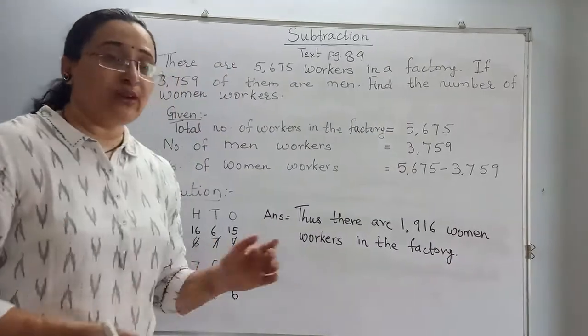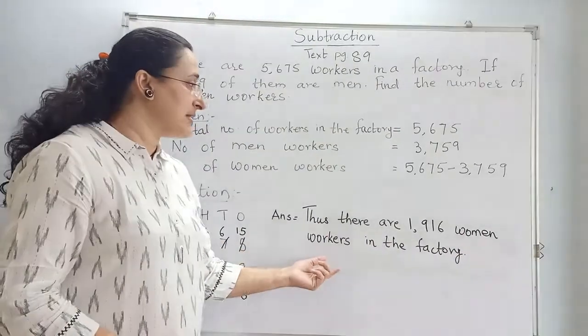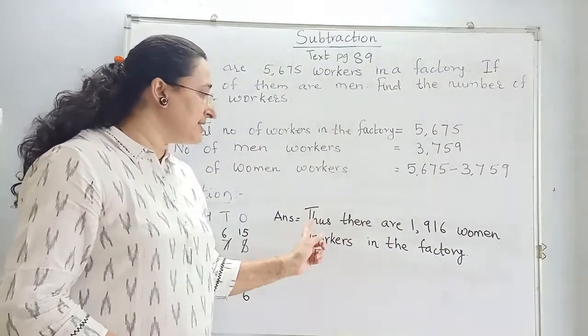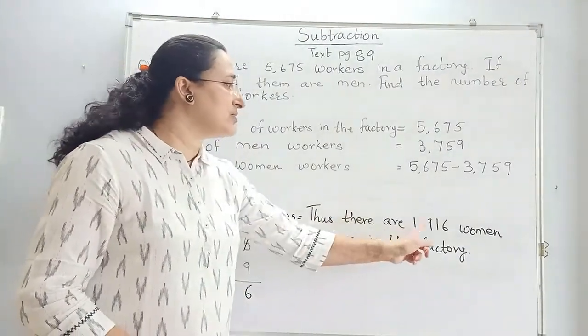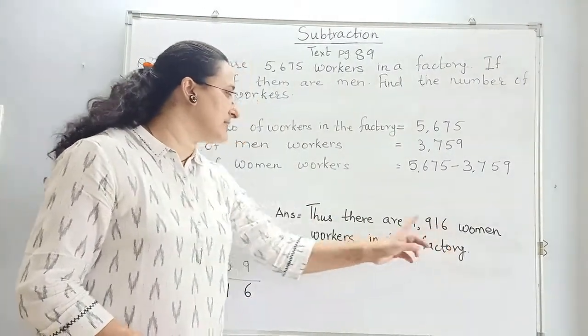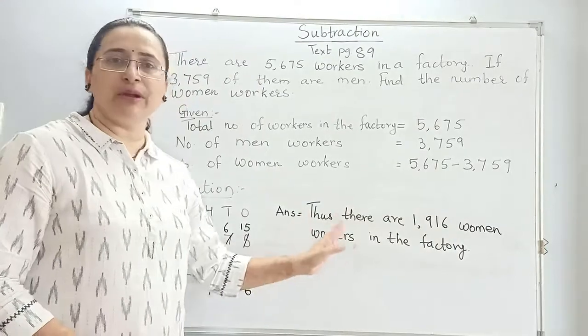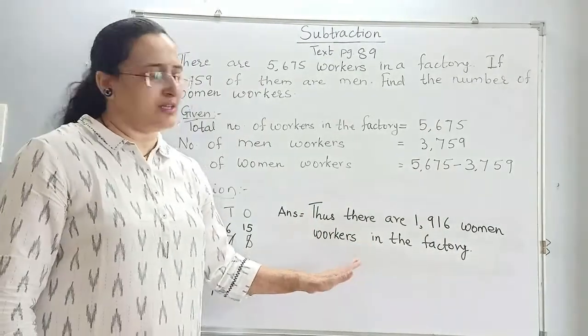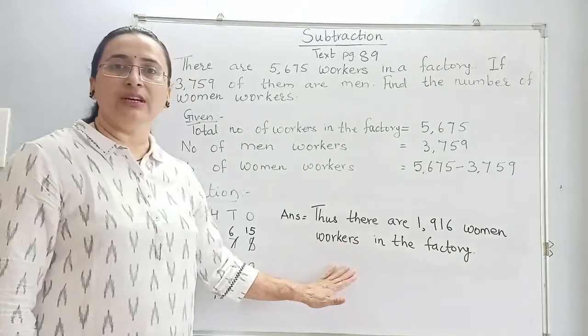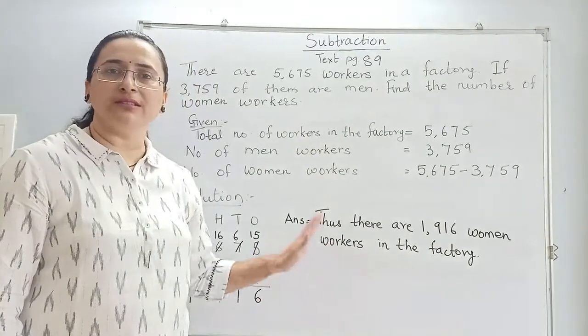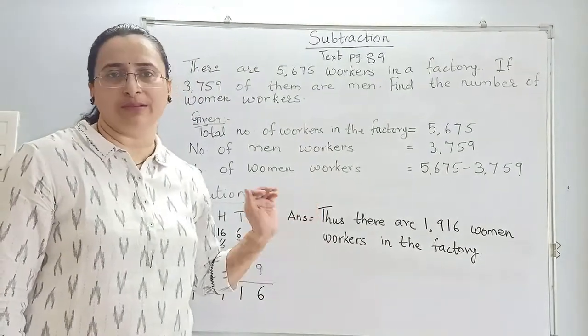Thus there are 1,916 women workers in the factory. You can also write the statement as: Thus 1,916 are women workers. So here our sum gets over.